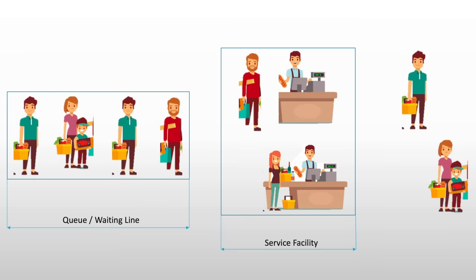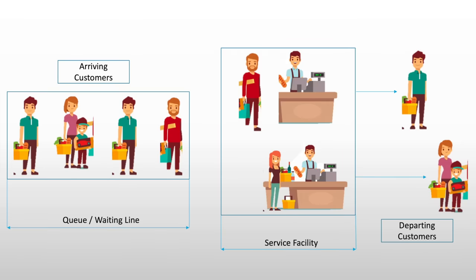The one line is called the queue or the waiting line. The people in the queue or waiting line are called the arriving customers. And those who just finished being serviced by the point-of-sale system or the servers are the departing customers. The queue and waiting line plus the service facility together is called the system, or the entire system queue.